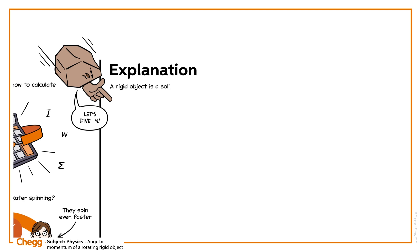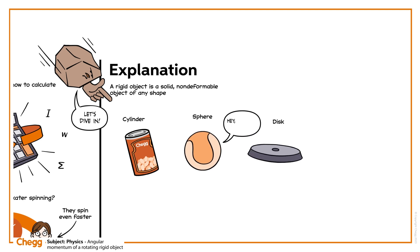A rigid object is a solid, non-deformable object of any shape. It could be a cylinder, sphere, disk, anything solid really. When solid objects like these rotate about a fixed point, they have momentum around the axis of rotation. That's what we call the object's angular momentum.